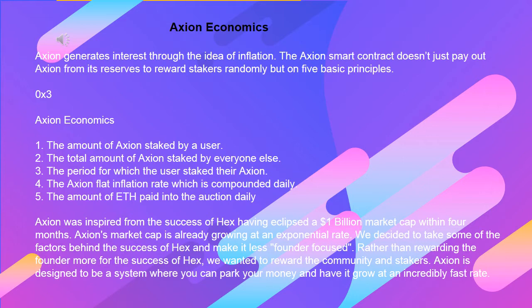Axion Economics: 1. The amount of Axion staked by a user. 2. The total amount of Axion staked by everyone else. 3. The period for which the user staked their Axion. 4. The Axion flat inflation rate, which is compounded daily. 5. The amount of ETH paid into the auction daily.